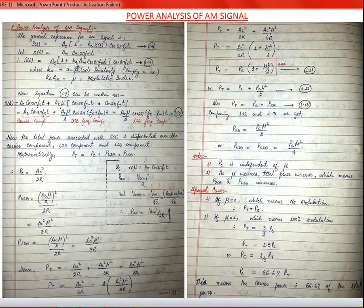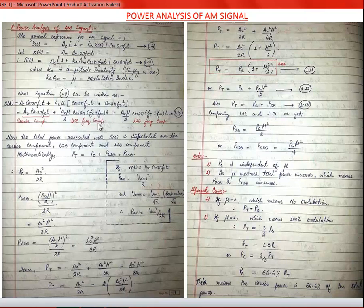Here, k_a is amplitude sensitivity — simply a constant — while k_a·A_m = μ is the modulation index. The equation can be written as S(t) = A_C·cos(2π·f_c·t) + A_C·μ·cos(2π·f_m·t)·cos(2π·f_c·t), which further expands to: A_C·cos(2π·f_c·t) [carrier] + (A_C·μ/2)·cos(2π·(f_c + f_m)·t) [upper sideband].